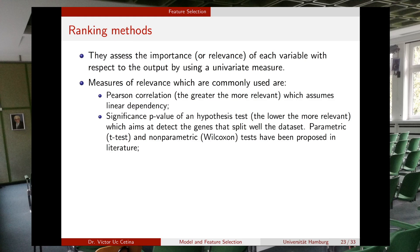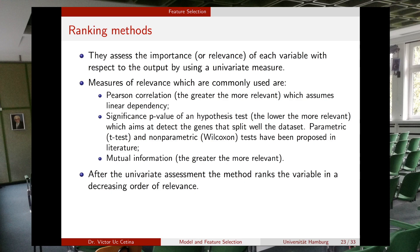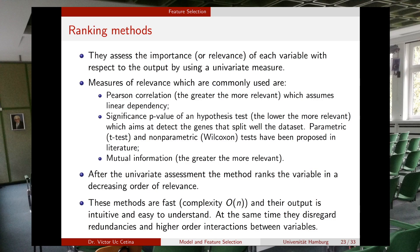Another very common measure of relevance is mutual information, which comes from entropy in information theory. The greater the mutual information, the more relevant the feature. After the univariate assessment, the method ranks features in decreasing order of relevance. These methods run in linear complexity and their output is intuitive and easy to understand, though they disregard redundancies and higher-order interactions between variables.